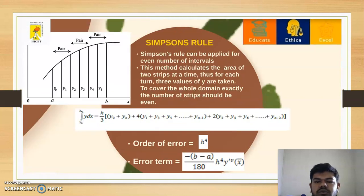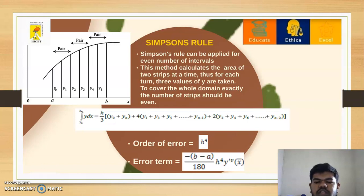Next, we will discuss Simpson's rule. Simpson's rule can be applied for any even number of intervals. This method calculates the area of two strips at a time; thus, for each term, three values of y are taken. To cover the whole domain, the number of strips must be even. The formula is: ∫[x₀ to xₙ] y dx = (h/3) [y₀ + yₙ + 4(y₁ + y₃ + y₅ + ... + yₙ₋₁) + 2(y₂ + y₄ + y₆ + ... + yₙ₋₂)]. The order of error is h⁴ and the error term is -(b-a)/180 · h⁴ · y⁽⁴⁾(x̄).